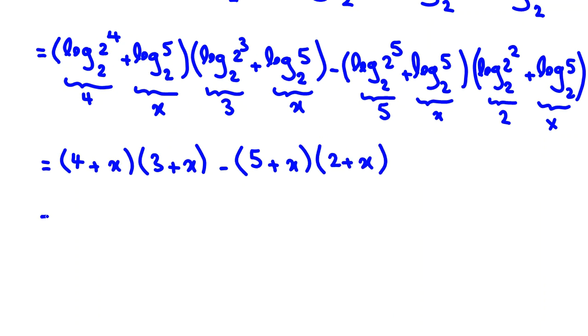Now, if we expand: 4 times 3 is 12, plus 4 times x is 4x, plus 3 times x is 3x, plus x times x is x squared, minus 5 times 2 is 10, minus 5 times x is 5x, minus x times 2 is 2x, minus x times x is x squared.